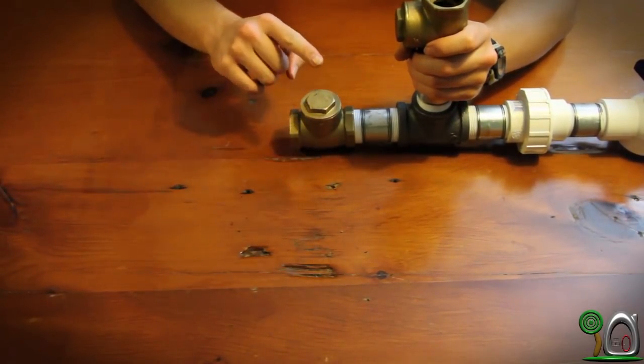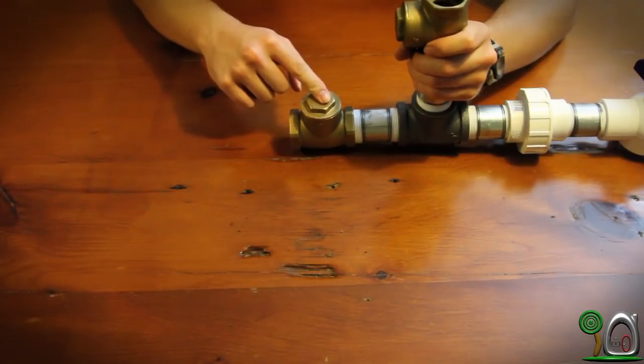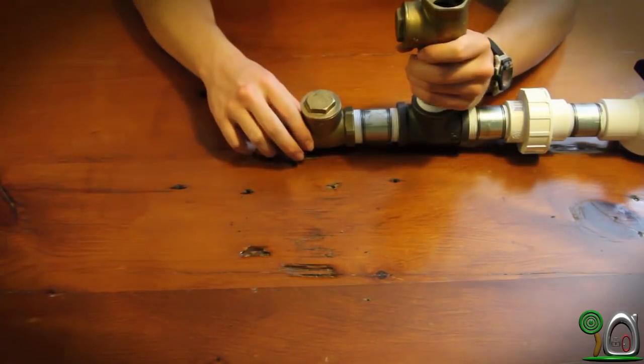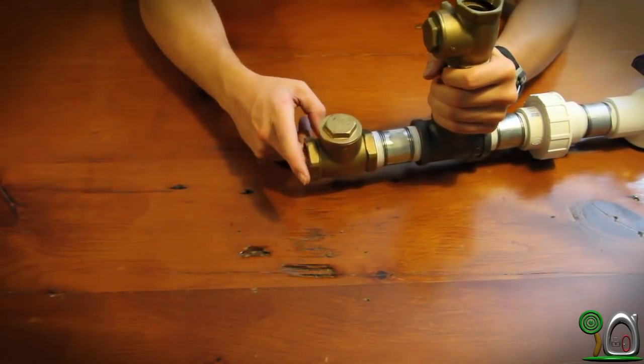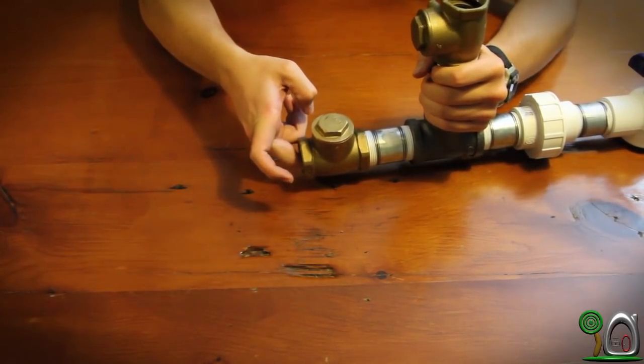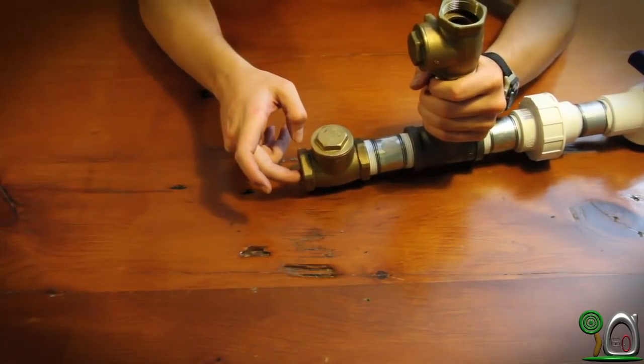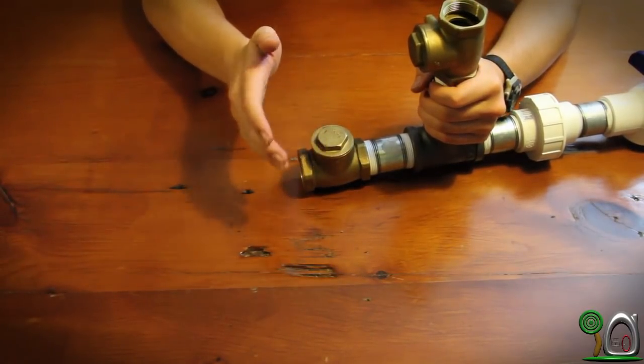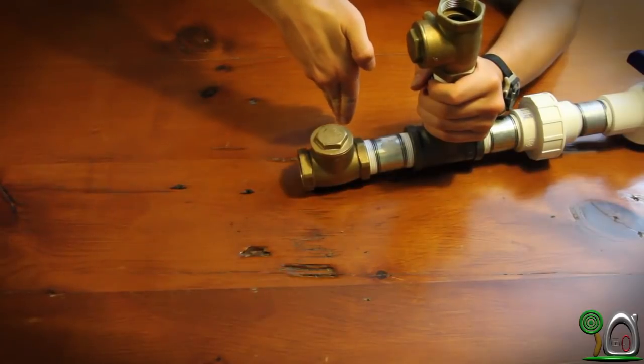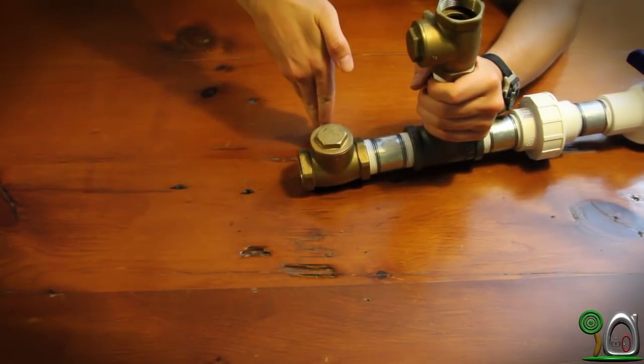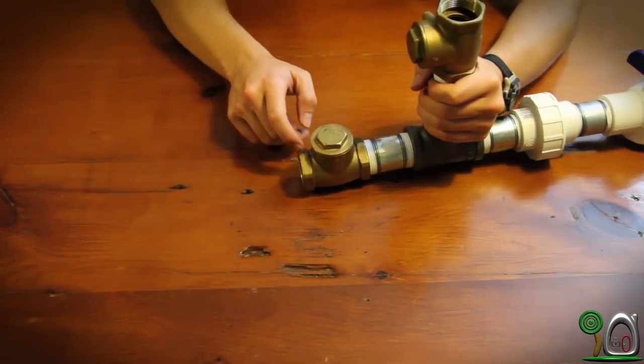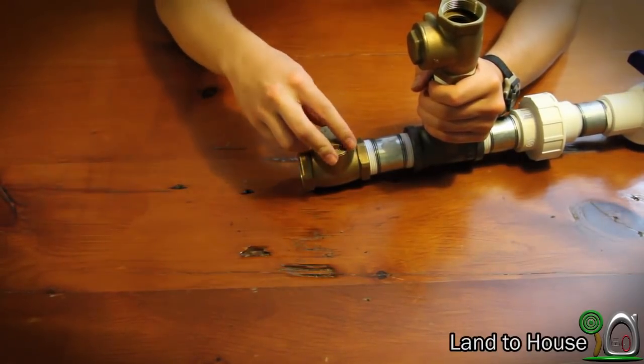because it needs to be closed due to the natural gravity force, so that whenever there's pressure behind here, it stays closed. But when pressure is released, it can easily swing up and then back down. So just make sure that this ball part is facing up.